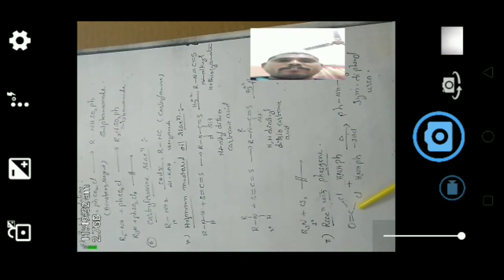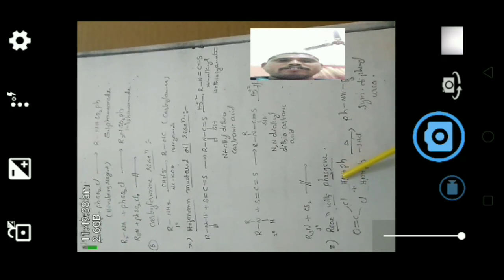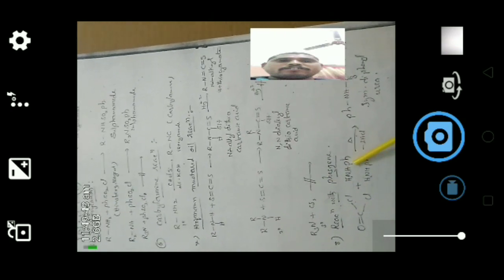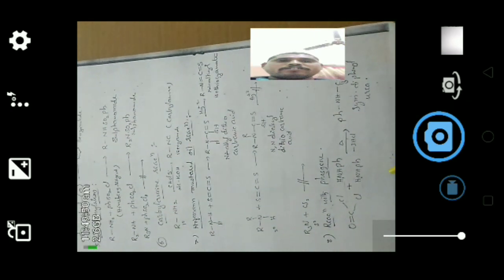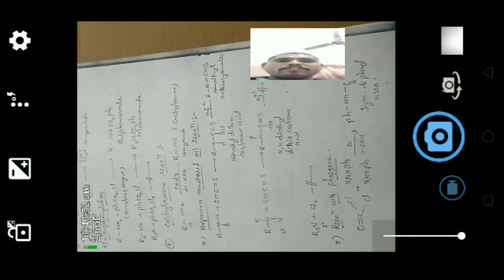When phosgene gas reacts with two molecules of aniline — one aniline and a second aniline — in the presence of heat, by losing hydrochloric acid, it gives symmetrical diphenyl urea. These are the chemical properties of aniline.